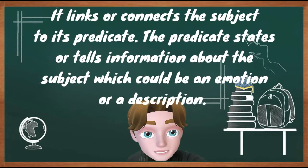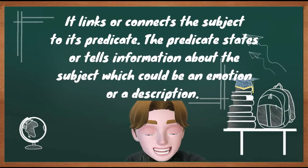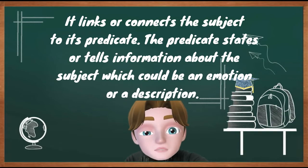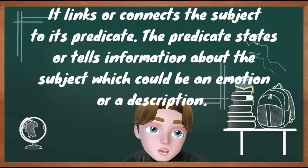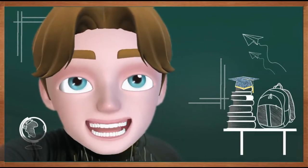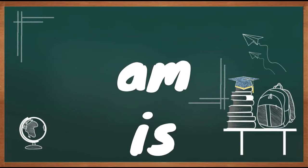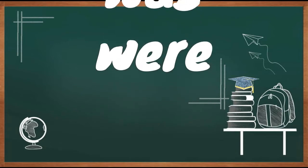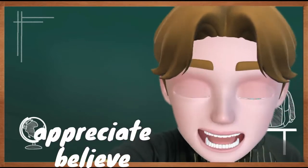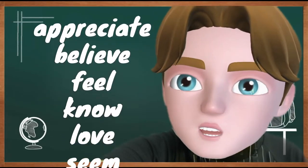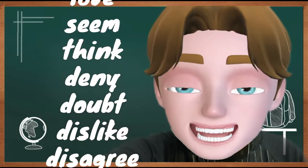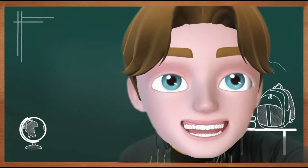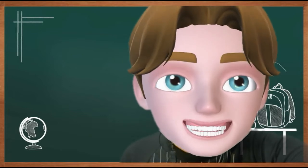Remember, the function of a linking verb is it links or connects the subject to its predicate. The predicate states or tells information about the subject, which could be an emotion or a description. Here are some examples of linking verbs: appreciate, believe, feel, know, love, seem, think, deny, doubt, dislike, disagree, and want.